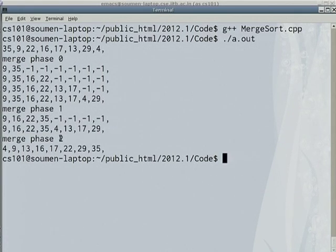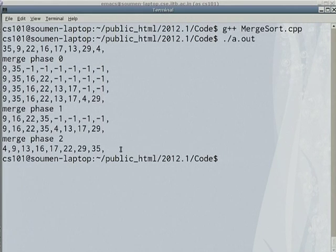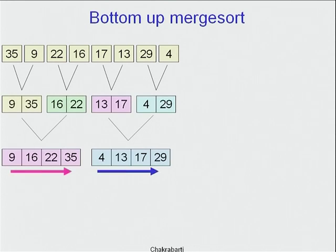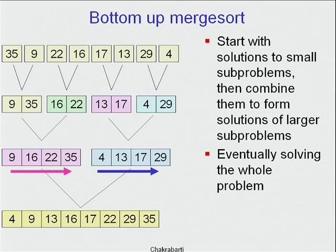Finally, merge phase 2 takes just one merge between those four elements and those four elements, resulting in sorted order. So it's now clear how merge sort works. This is a bottom-up way of expressing merge sort, where we start with small solutions to small subproblems, combine them to form solutions to larger and larger subproblems, eventually solving the whole problem.